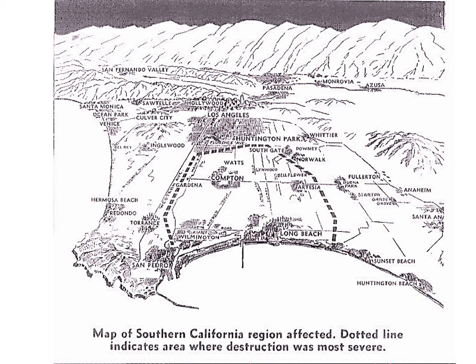In just a few seconds, hundreds of brick and mortar buildings collapsed or were severely damaged, killing more than 120 persons. Several dozen additional fatalities were recorded in other cities. The damage estimates varied from $40 million to $50 million, which is about $500 million in 2018 dollars. More than 31,000 buildings in the area suffered varying degrees of damage. The falling debris from damaged buildings accounted for many of the injuries as people ran outdoors and were struck by falling debris.